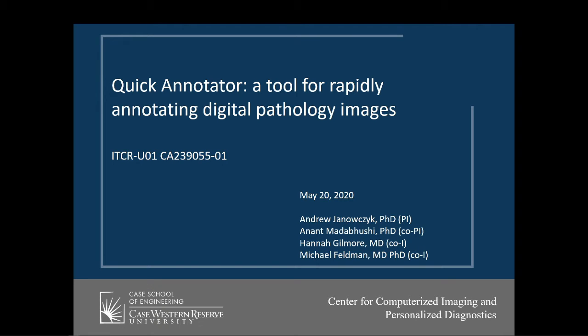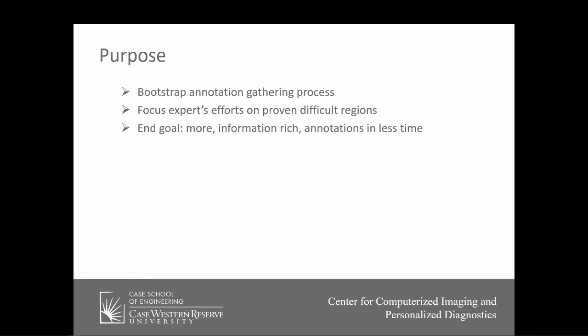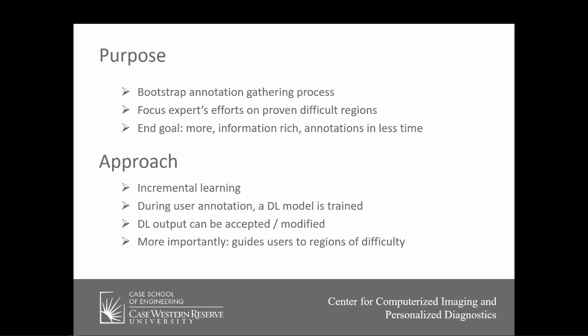This is a brief tour of the functionalities of the Quick Annotator tool. The purpose of the Quick Annotator is to rapidly bootstrap annotation creation for digital pathology projects by helping identify images in small regions where a classifier is likely to struggle. By intentionally focusing in these areas, less pixel-level annotations are needed, significantly improving the efficiency of a user's time.